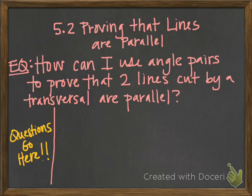Now let's take a look at 5.2. We're going to be skipping 5.1. 5.2 is entitled 'Proving that Lines are Parallel,' and we are going to use these special angle pairs to do that. Our essential question is: how can I use angle pairs to prove that two lines cut by a transversal are parallel? Please write any questions you have in the left column so you can remember to ask me when I see you again on Tuesday.